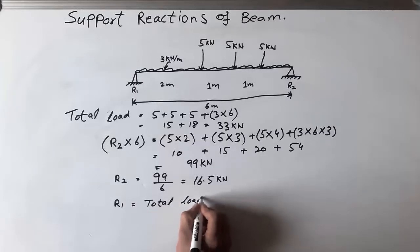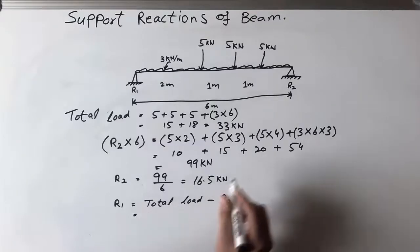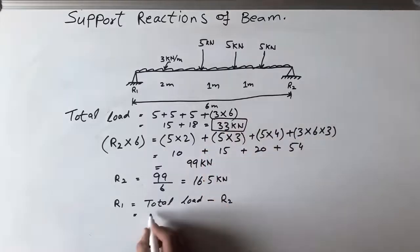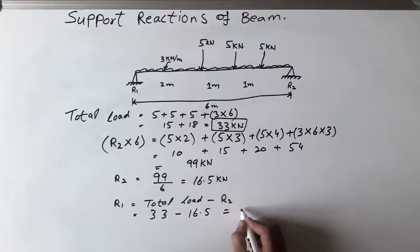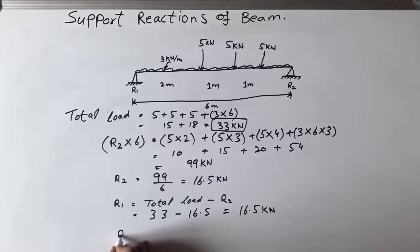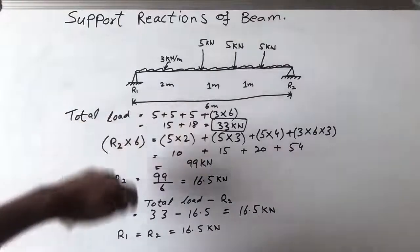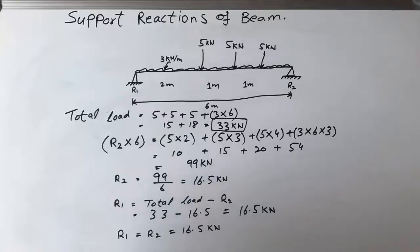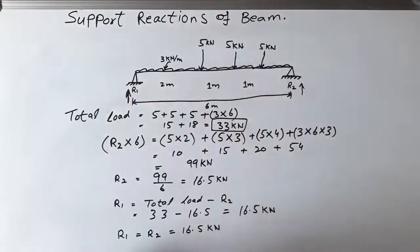To calculate R1: R1 is equal to total load minus R2. The total load is 33 kN, so R1 equals 33 minus 16.5, which gives 16.5 kN. So R1 equals R2 equals 16.5 kN, meaning both supports are each resisting 16.5 kN upwards.